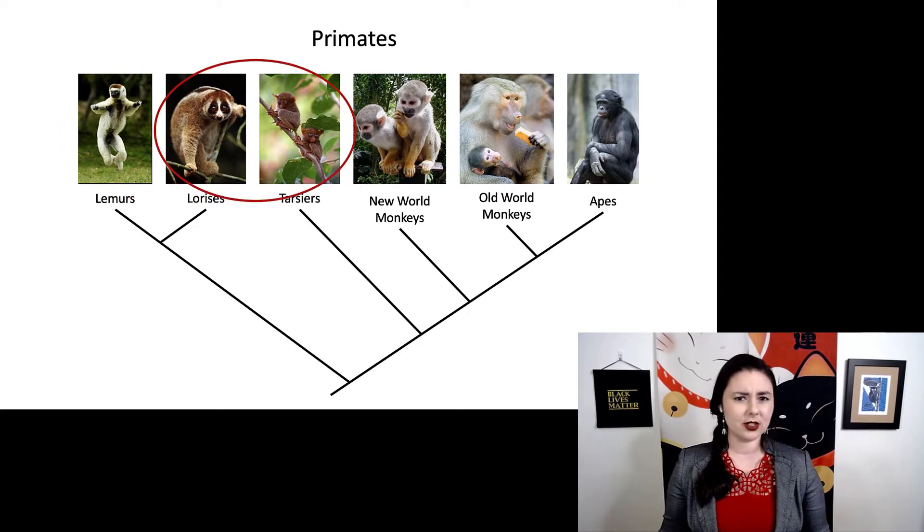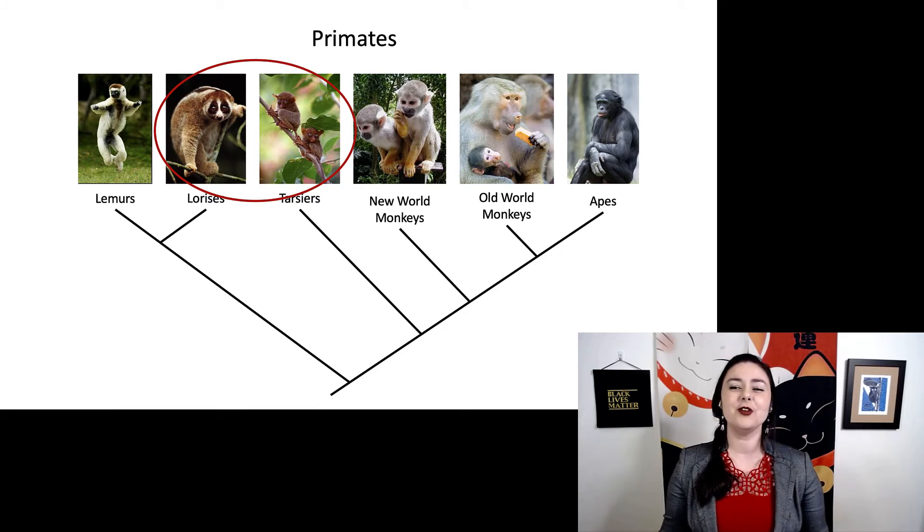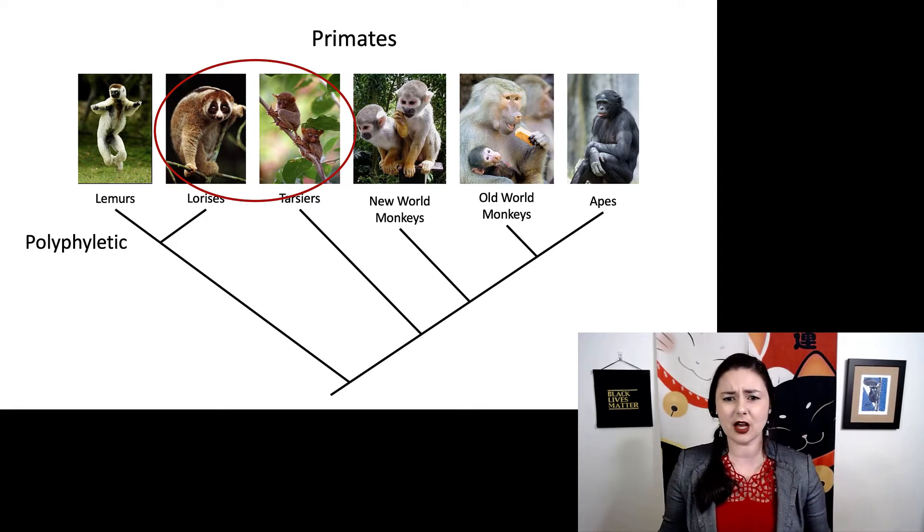Now, what if I circle lorises and tarsiers? What type of group is this? Paraphyletic, monophyletic, polyphyletic? If you guessed polyphyletic, that would be correct. Because look, there are so many other groups we're excluding here. And honestly, lorises and tarsiers aren't incredibly closely related when we look at the relationships on this tree.